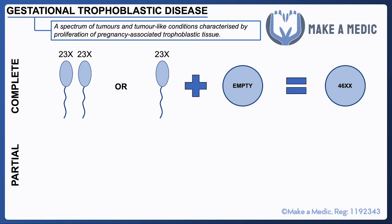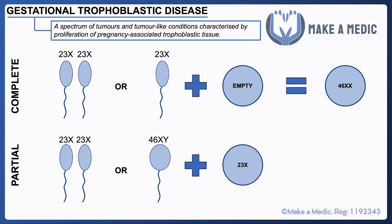A partial mole on the other hand is formed when either two normal sperm or one sperm with the full set of chromosomes fuses with an egg that also contains some chromosomes — the normal number of 23 chromosomes. This means you end up with a huge abundance of chromosomes within this fertilized egg, ending up as a 69 XXY fertilized egg, and again it has this overdose of chromosomal material from the male partner, hence leading to this excessive growth.